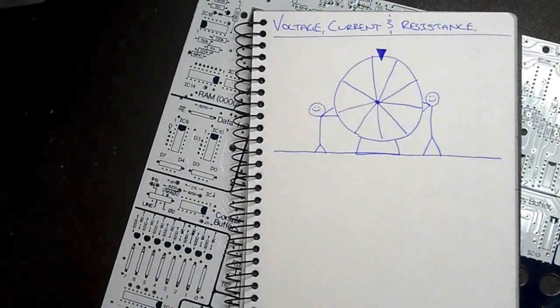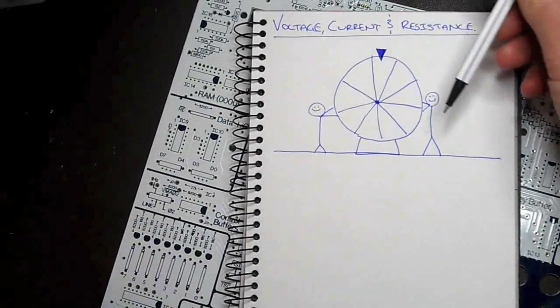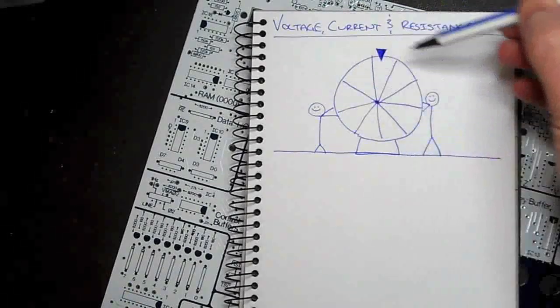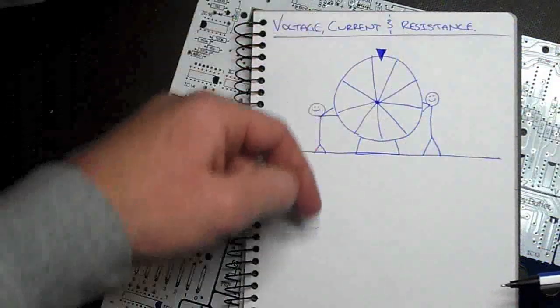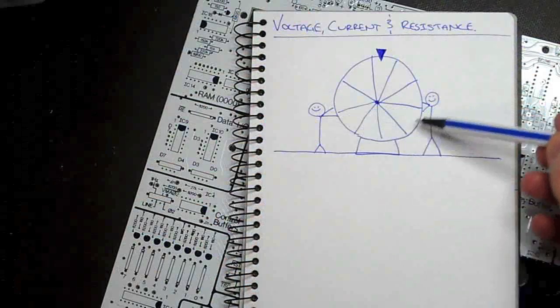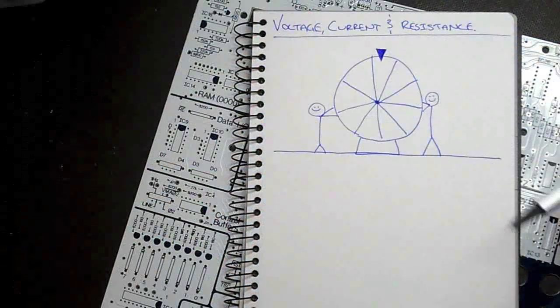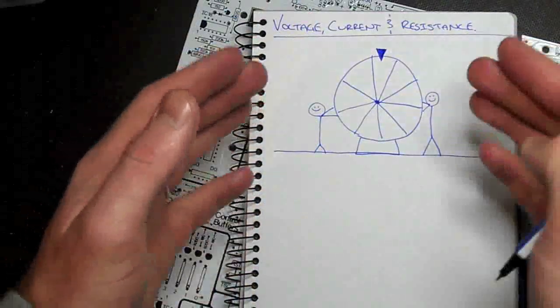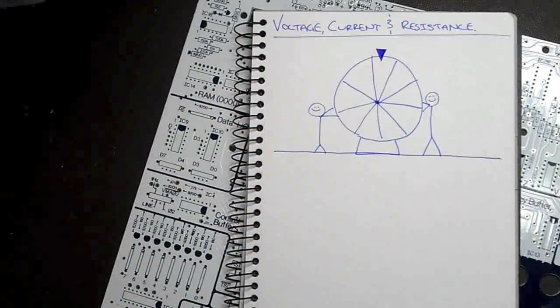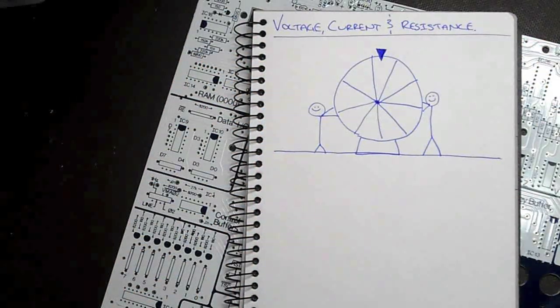Of course, the answer is that it's not going to turn at all. If you're pushing down, so you want it to go this way, and the other person is pushing down, so they want it to go this way, with exactly the same amount of force, the wheel will just stay exactly where it is. We won't actually get anywhere.